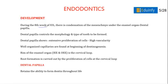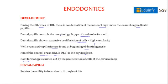During the 8th week of intrauterine life, there is condensation of mesenchyme under the enamel organ, forming the dental papilla. The dental papilla controls the morphology and type of tooth to be formed. It shows extensive cell proliferation and high vascularity with well-organized capillaries, which are found at the beginning of dentinogenesis. The rim of the enamel organ — inner enamel epithelium and outer enamel epithelium — forms the cervical loop, through which root formation occurs. The dental papilla retains the ability to form dentine throughout life.